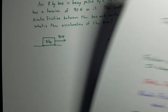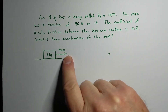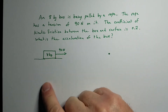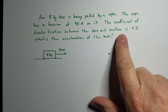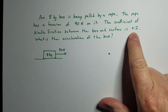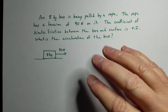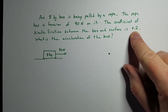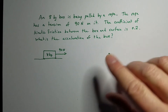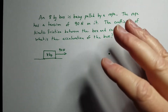Let's look at a problem. We've got an 8-kilogram box being pulled horizontally by a rope with a force of 90 newtons. The coefficient of kinetic friction between the box and the surface is 0.2. Coefficients in physics usually don't have units — the bigger the value, the stronger it is. It's just a multiplication factor.